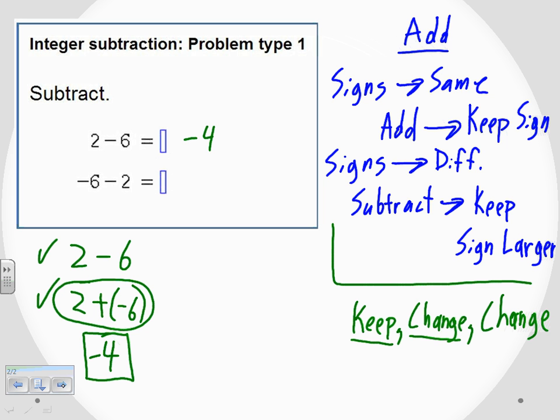And now, for the second problem, it's also a subtraction problem. It is negative six minus two. We're going to go through the same procedure. Keep that first number the same. So it was negative six. It's still negative six. That's my keep. Then change the operation from subtraction to addition. So that becomes plus. And then finally, change the sign of the last number. So instead of being minus a regular two, we're now going to have a negative two. That's changing the last sign.